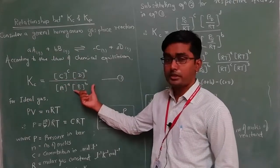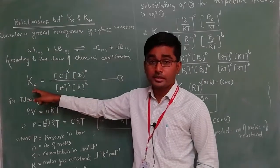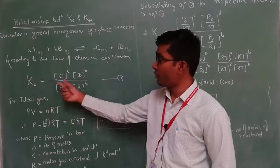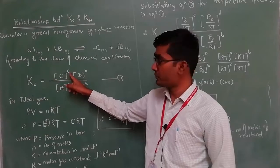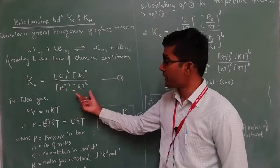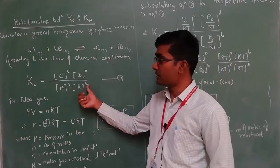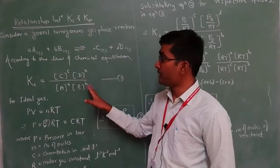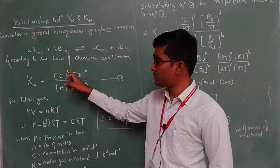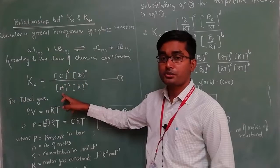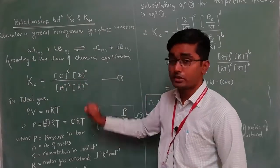Kc is equal to the concentration of products divided by the concentration of the reactants. Equilibrium constant Kc is defined as the ratio of the product of concentrations of products raised to their stoichiometric coefficients to the product of concentrations of reactants raised to their stoichiometric coefficients. This ratio is constant and is called the equilibrium constant. Let us call this Equation 1.